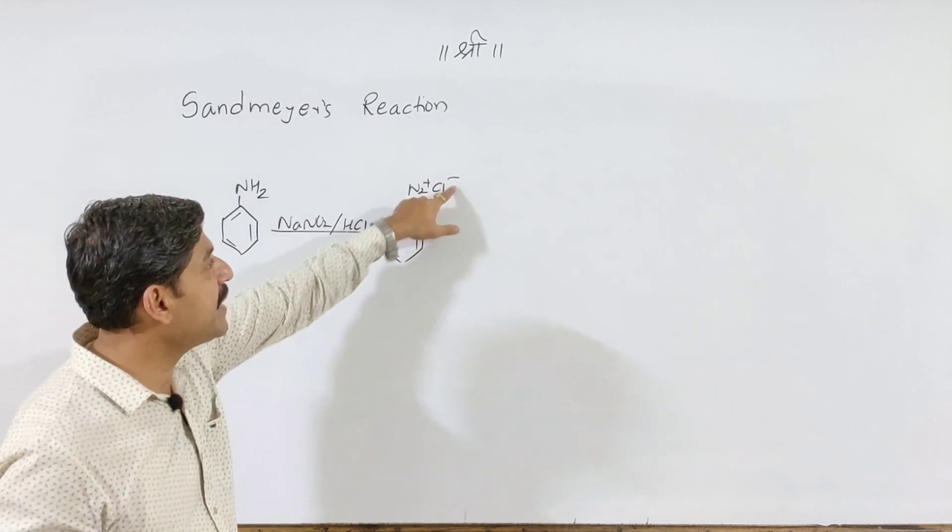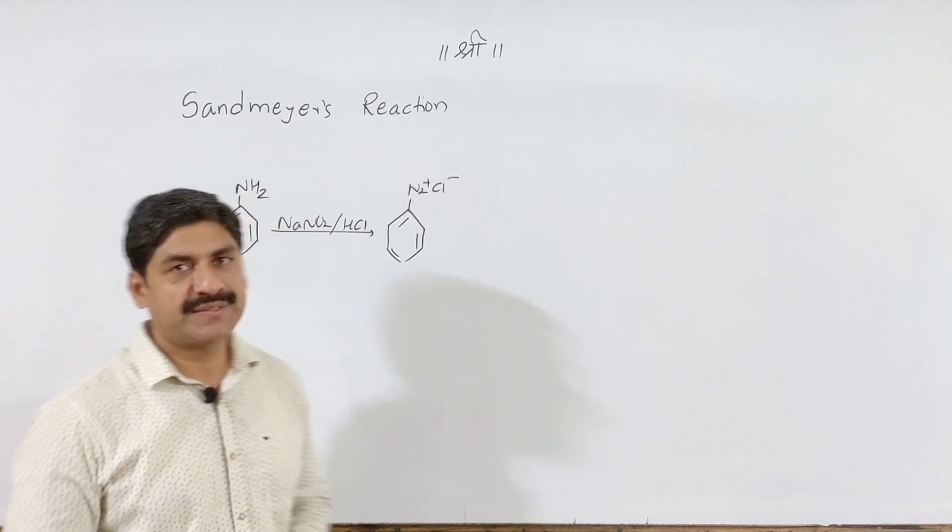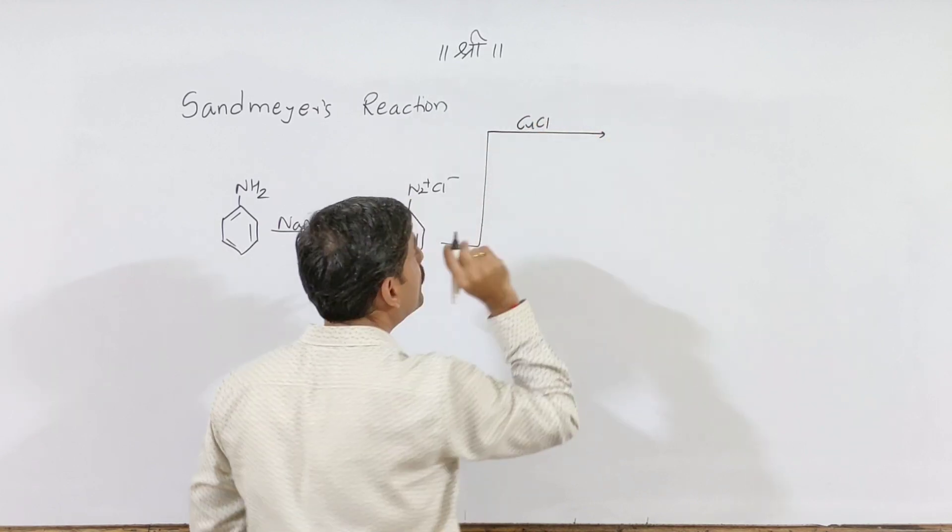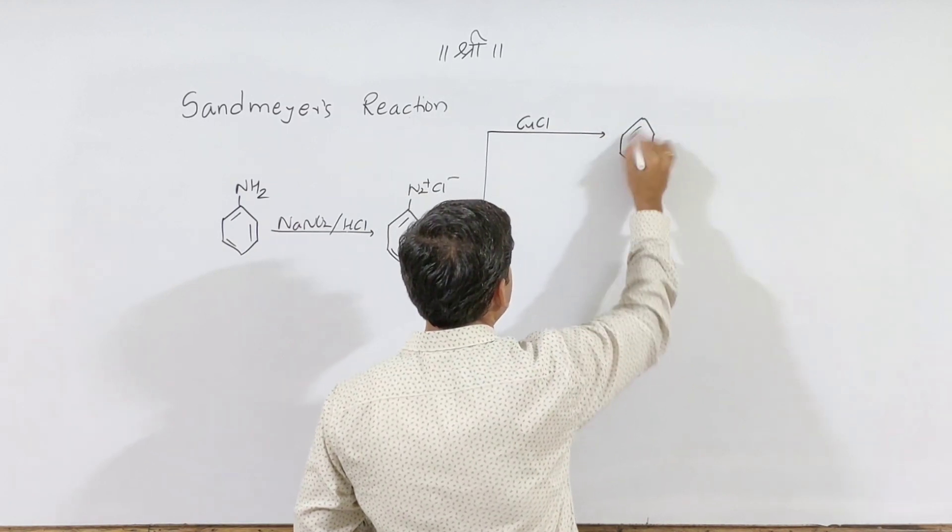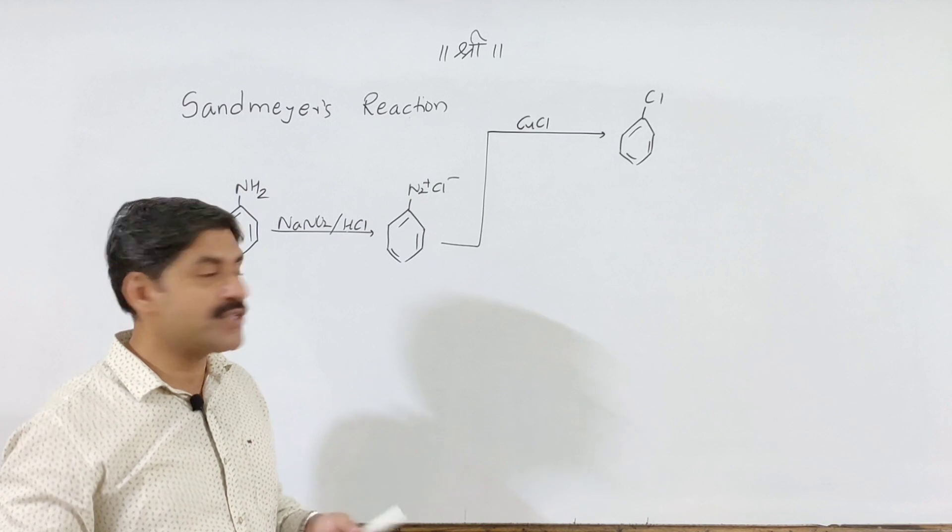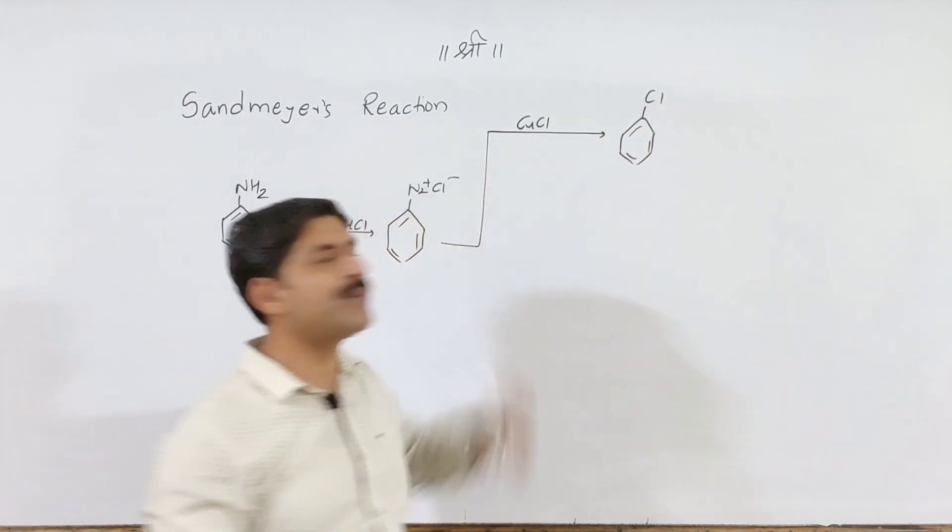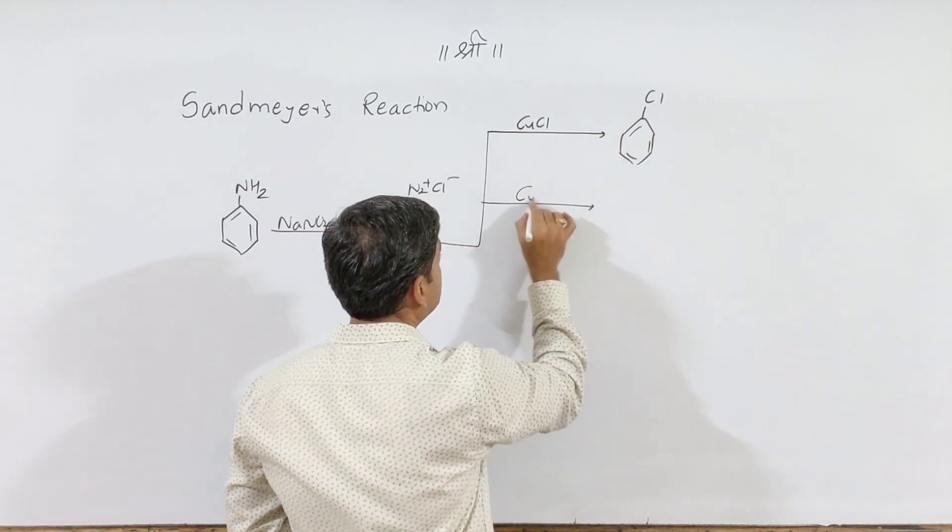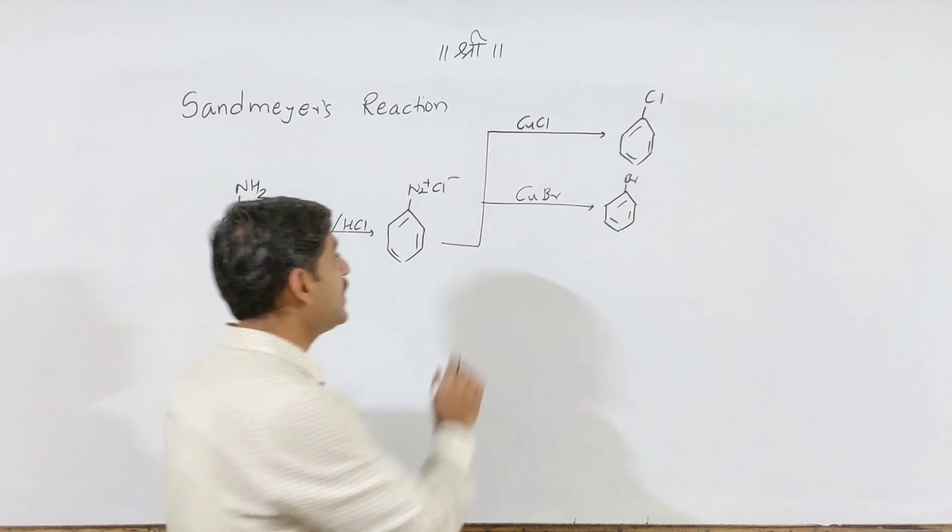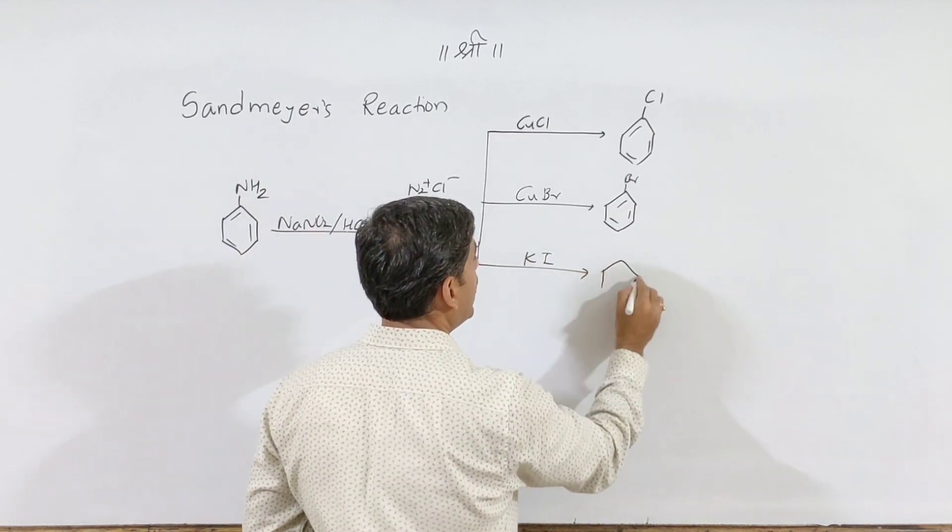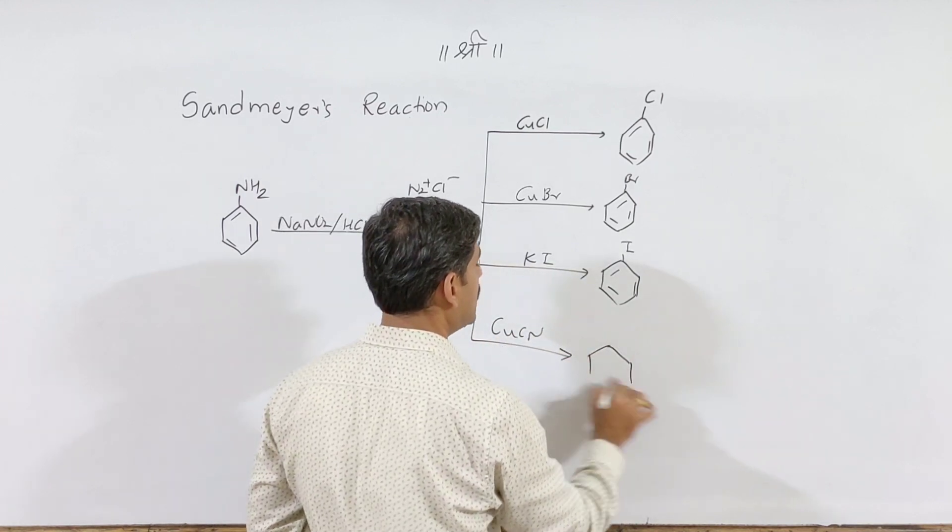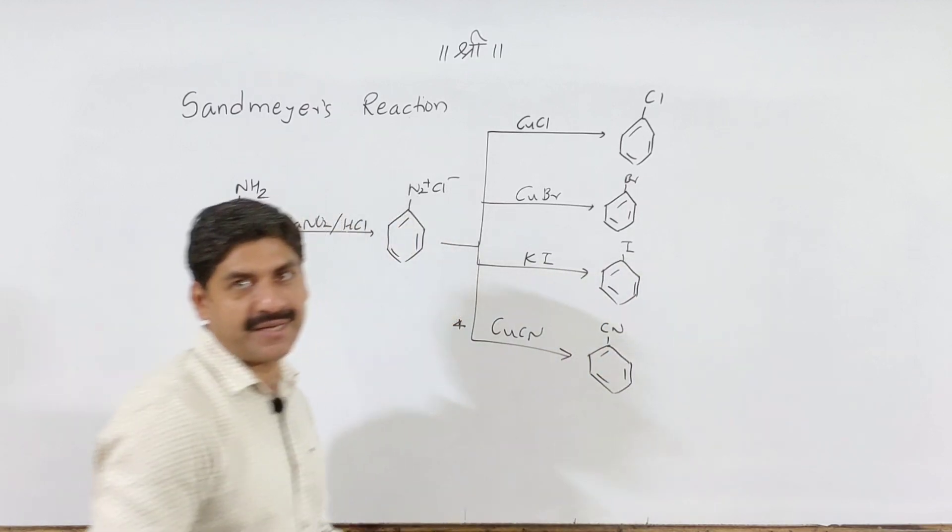From benzene diazonium chloride, when we react with cuprous chloride (Cu+Cl), the diazonium group is replaced by chlorine to give chlorobenzene. This is Sandmeyer's reaction - replacement of diazonium group by halogen when reacting with cuprous salts. With cuprous bromide, we get bromobenzene. With potassium iodide (KI), we get iodobenzene. With cuprous cyanide (CuCN), we get cyanobenzene.